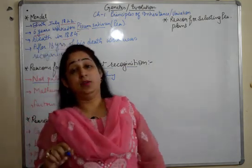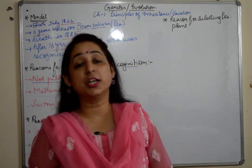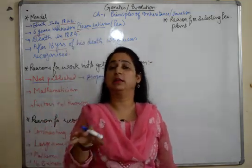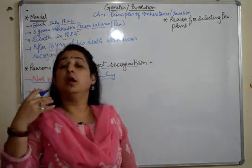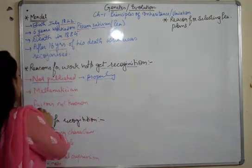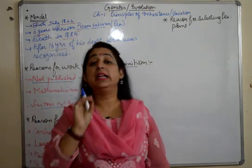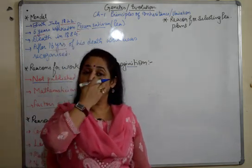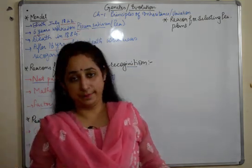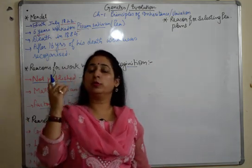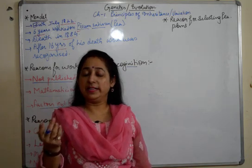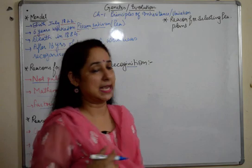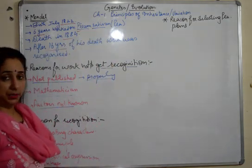Second, he was a mathematician, and his work was in biology. Biologists could not agree with whatever he said — how could a mathematician give correct biological hypotheses? So his work was not accepted by biologists. Third, he gave the term 'factor' for what we now call genes, but that term was unknown to everyone. People could not understand what he was trying to say, so this was also a reason his work was not recognized.